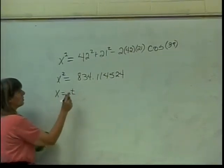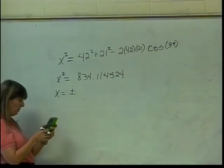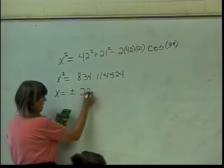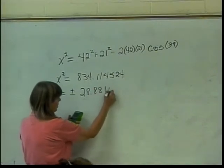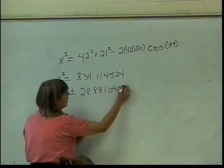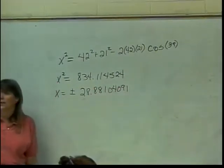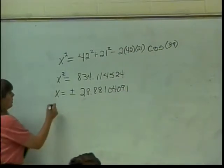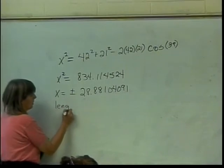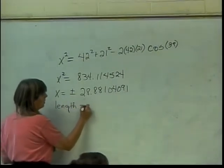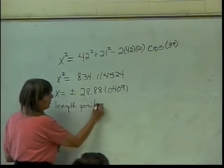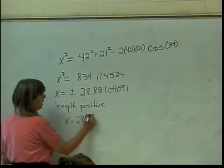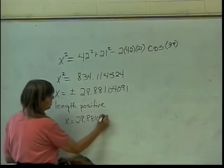I get plus or minus the square root of this number. So plus or minus 28.88104091. But I'm talking about a triangle. So what can you tell me about x? Length is positive.